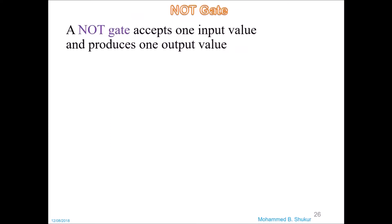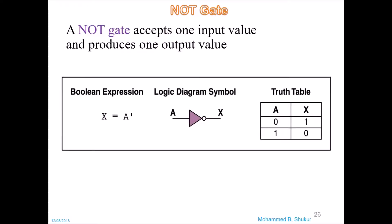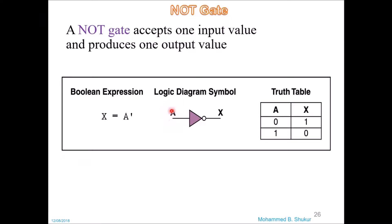The first gate is the NOT gate. A NOT gate accepts one input value and produces one output value. The input is capital A and the output is capital X. If the input is logic 0, the output will be logic 1, and if the input A is logic 1, the output is logic 0 — we inverse the situation. The Boolean expression is X equals A-bar, meaning X is the inverse of A.